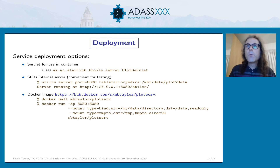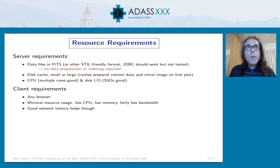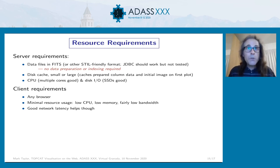In terms of deployment, this is implemented as a servlet, so you can run it within Tomcat or whatever you've got. If that's too much trouble, you can run a one-line command using stilts server and it will run up on localhost, which could be public if that port is public. There's also a Docker image if you like that sort of thing. In terms of resource requirements, the server needs to be able to access the table in a format that STILTS understands — FITS files are a good choice, but other options are available. It should be able to talk to a relational database using SQL directly. It will help to have a reasonable-sized disk cache, fast disks, and multiple cores. On the client side, the requirements are very limited — you just need a browser.